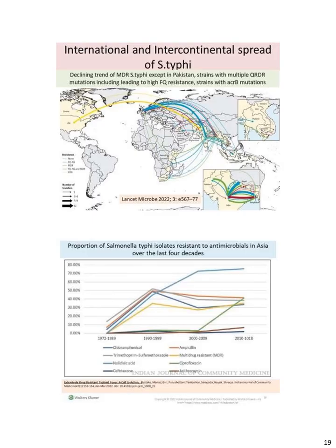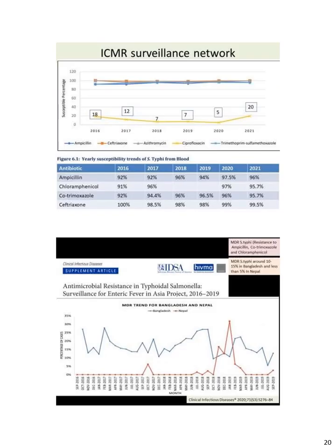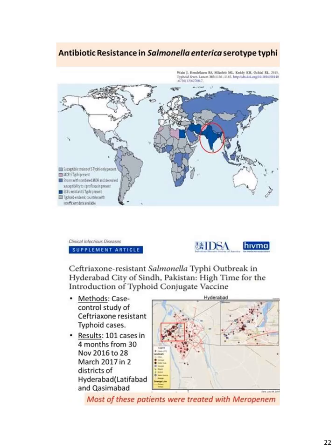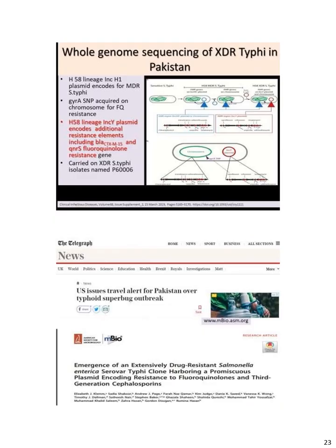Resistance among antibiotics — azithromycin and ciprofloxacin resistance is increasing. Resistance of Salmonella Typhi has been reported from many parts of Pakistan, and azithromycin resistance has been reported from parts of Bangladesh. In Pakistan, the H58 lineage has been observed to carry additional resistance elements including BLA and QNFR fluoroquinolone resistance.